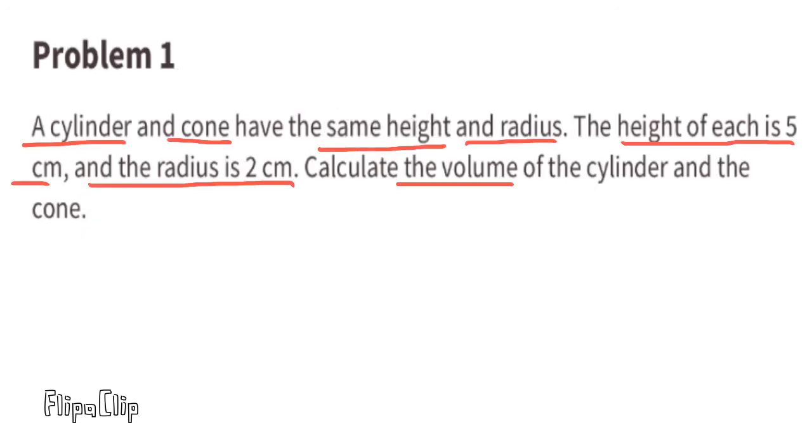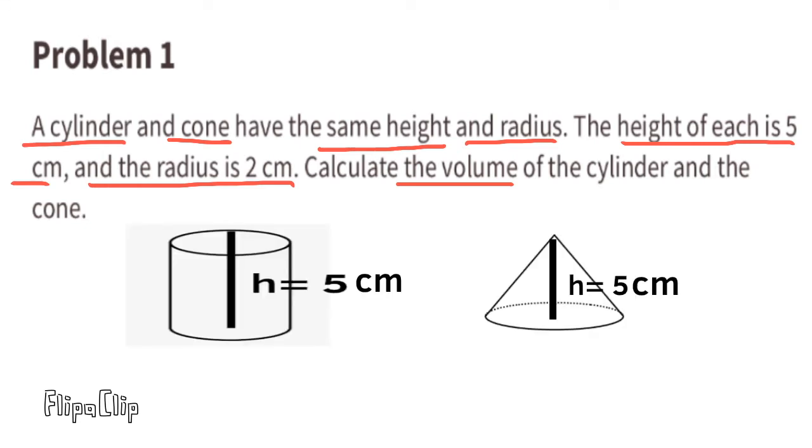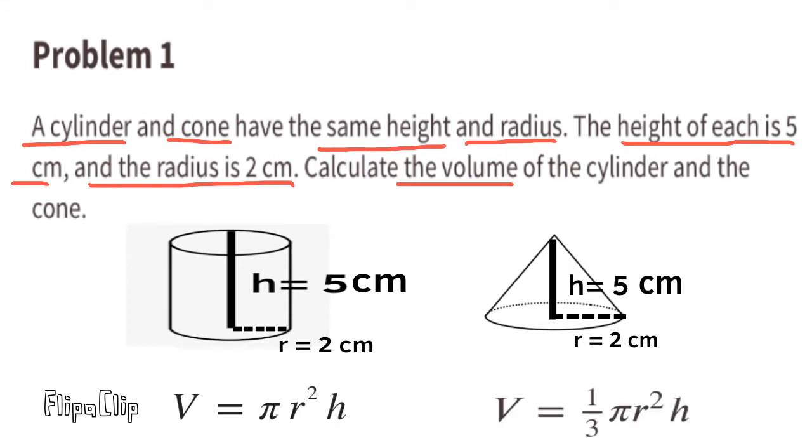Problem number 1. A cylinder and cone have the same height and radius. The height of each is 5 centimeters and the radius is 2 centimeters. Calculate the volume of the cylinder and the cone.